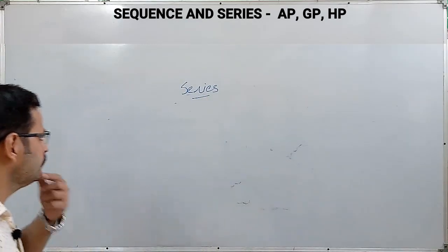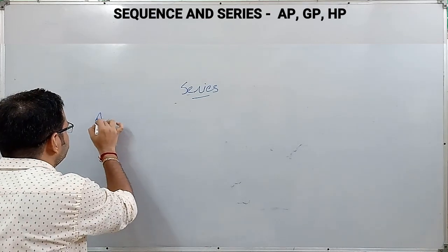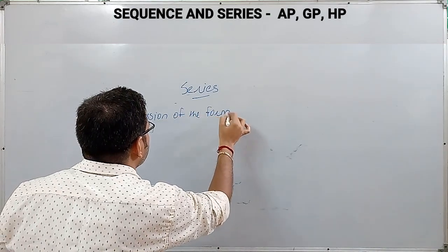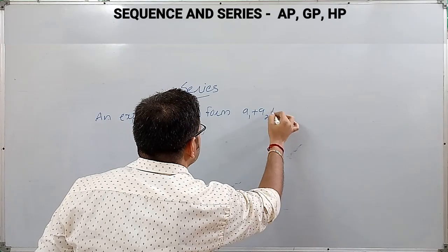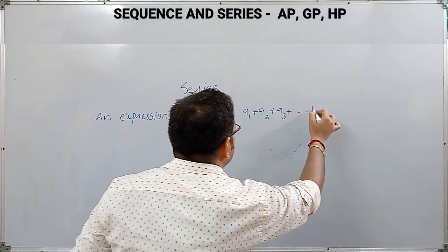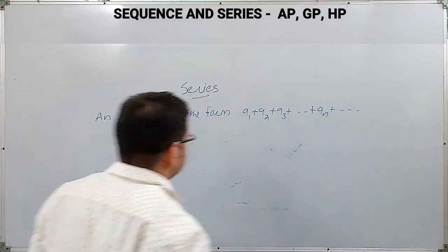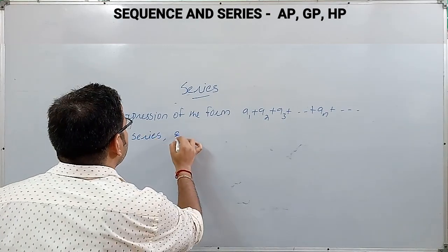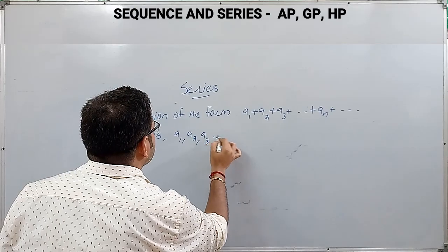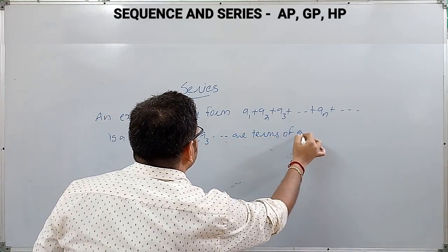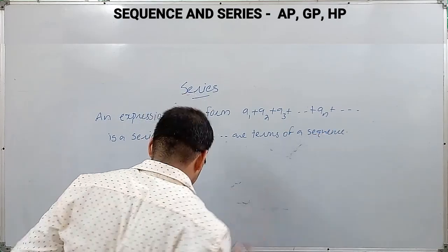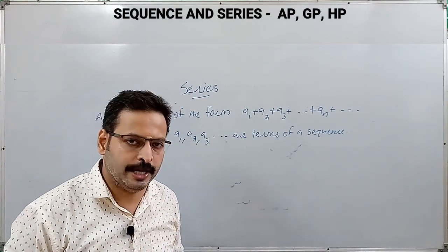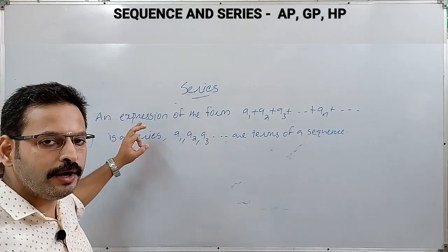Now consider the second portion: series. An expression of the form A1 + A2 + A3 + ... + An + ... is a series, where A1, A2, A3, etc. are terms of a sequence. In short, a series is the sum of the elements of a sequence.